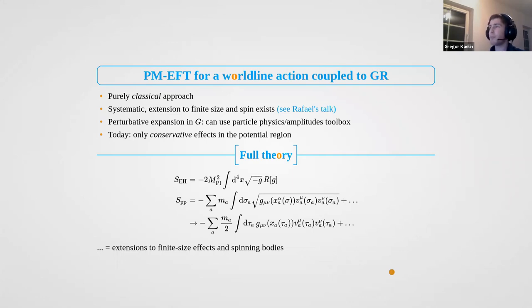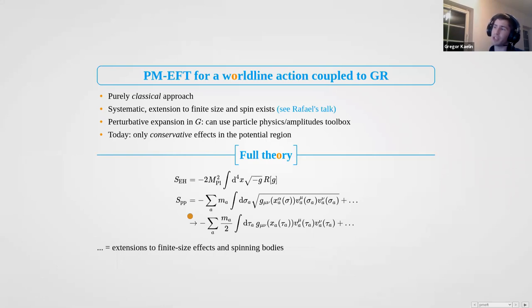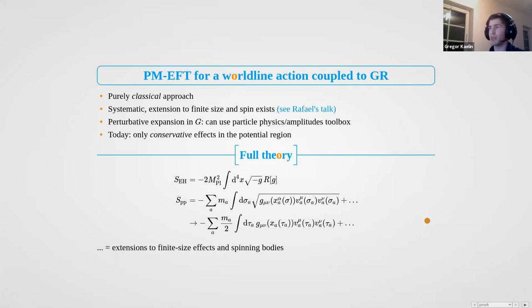What I want to focus on is this particular expansion in G, because there's a lot of amplitude methods and other particle physics tools we can use. My setup is the same: I'm going to have the Einstein-Hilbert action and couple a worldline point particle to it. I'm going to use a Polyakov-type action that's very nice because the graviton only couples to my sources — the two worldlines — in a linear fashion. It's essentially a one-point function, and then you can add finite size effects, spin, and so on.